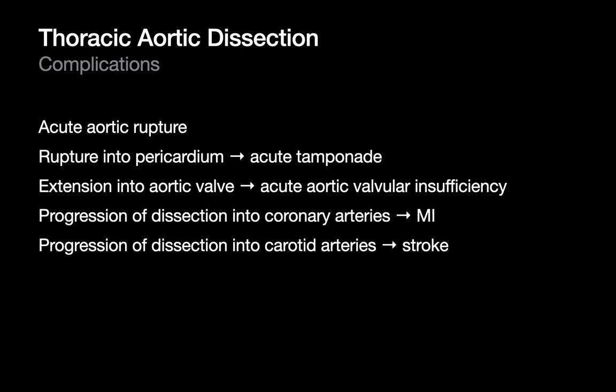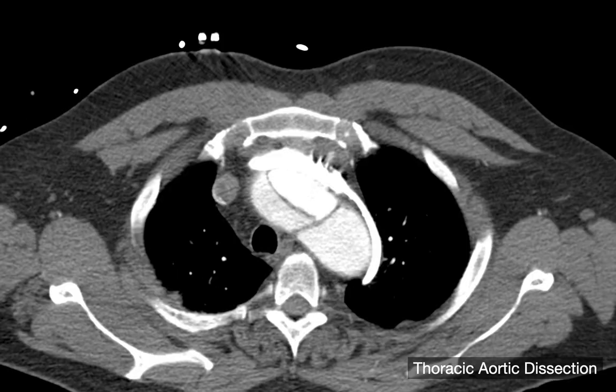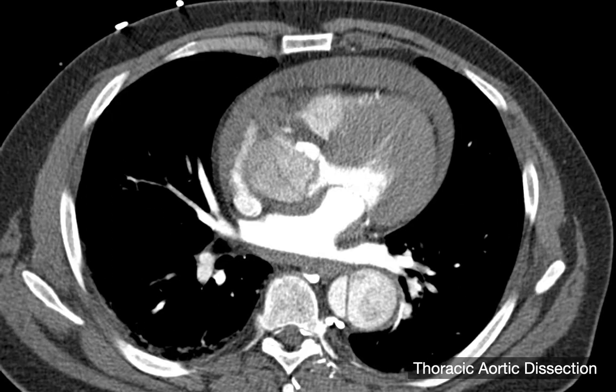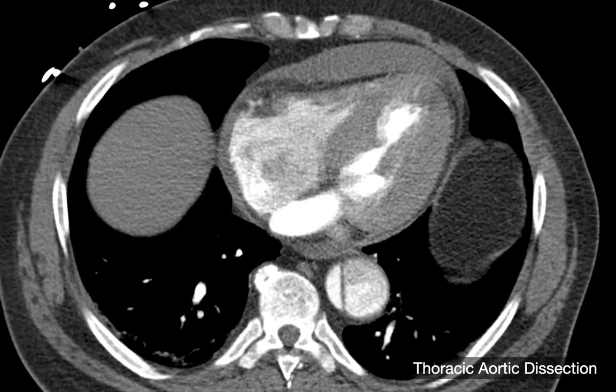Thoracic aortic dissections are taken very seriously because of the potential complications of an untreated dissection. Besides frank rupture into the mediastinum, a dissection may progress upstream and rupture into the pericardium or damage the integrity of the aortic valve. The dissection flap may also progress upstream into a coronary artery or carotid artery, resulting in an MI or stroke. In this type A dissection, the dissection has proceeded all the way to the aortic root and ruptured into the pericardial space, resulting in hemopericardium under arterial pressure.